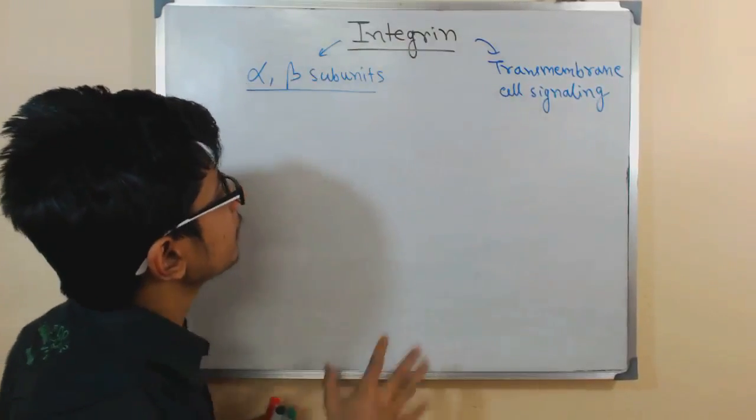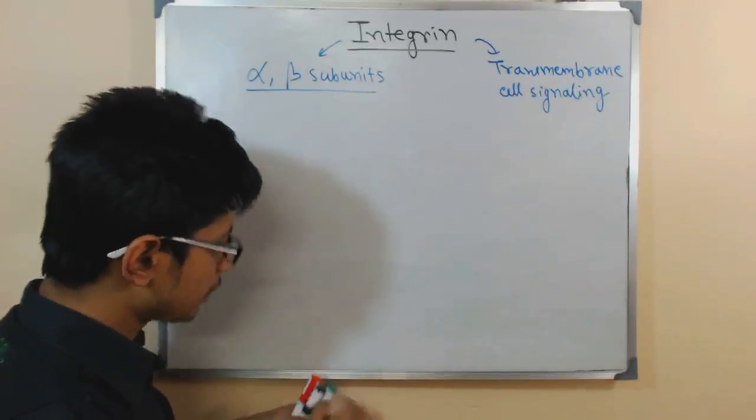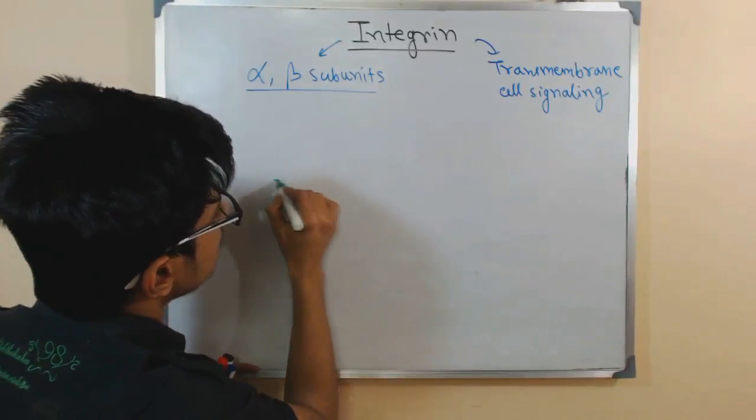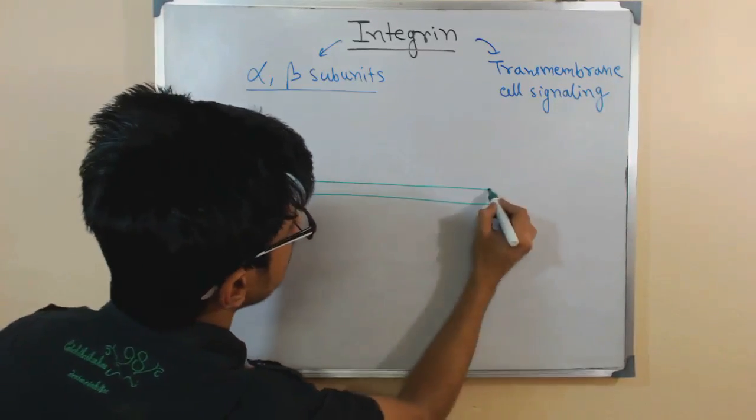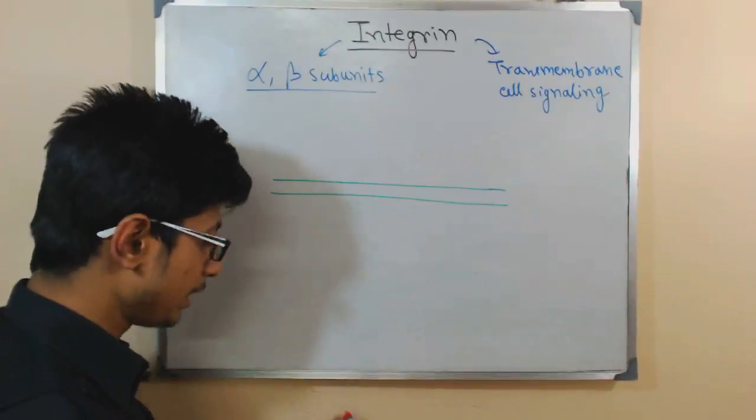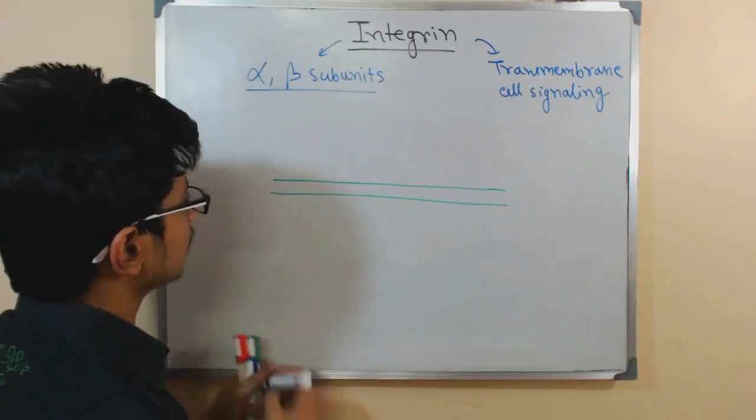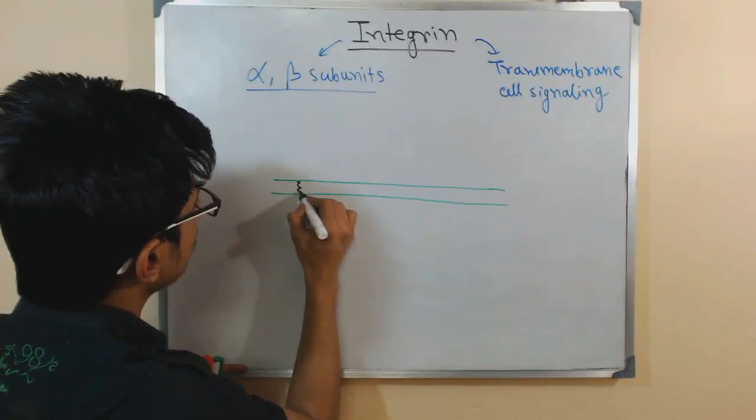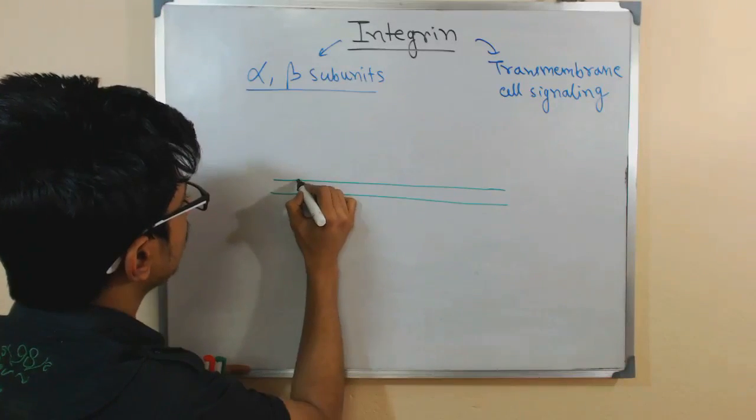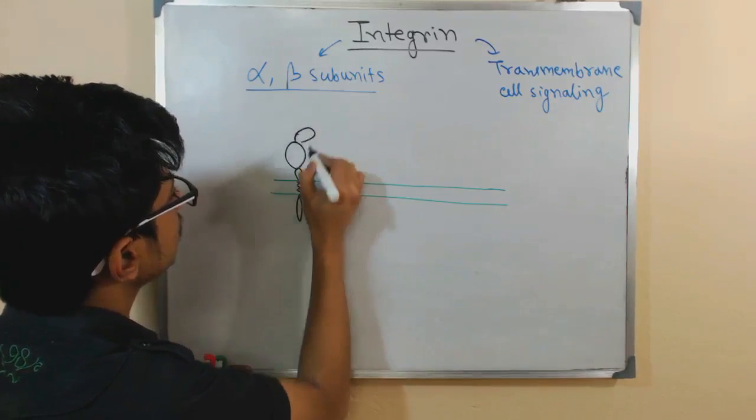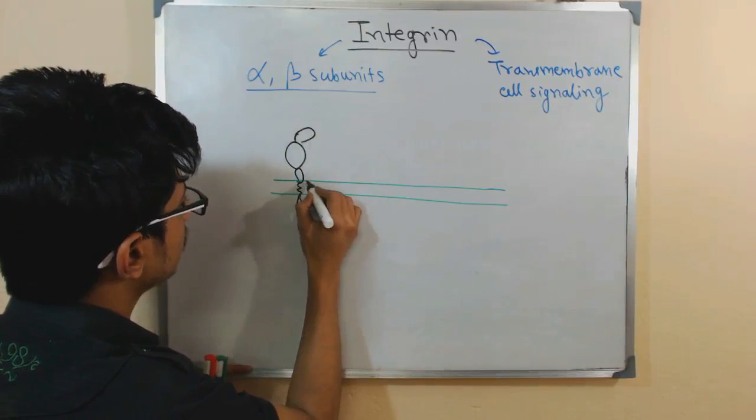So, here it is about the integrin. If I draw the simple structure of it, it will look something like that. So, let us say this is a cell membrane and in the cell membrane, we have the integrin embedded, two different subunits are there. So, let us say, membrane spanning portion and let us say, this is one subunit.